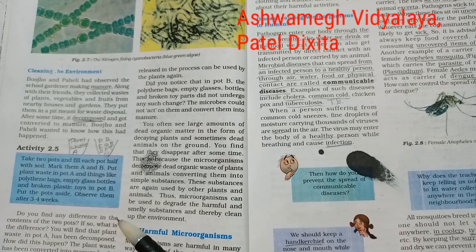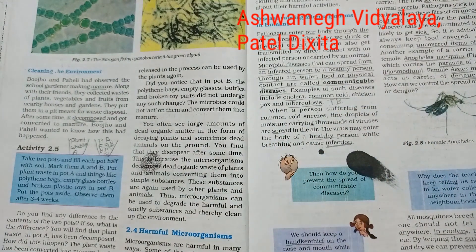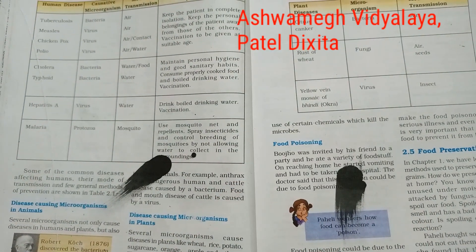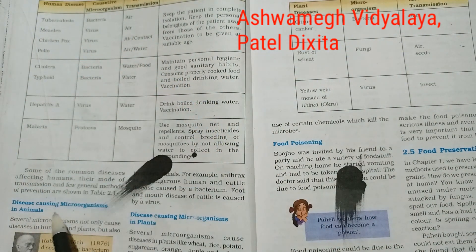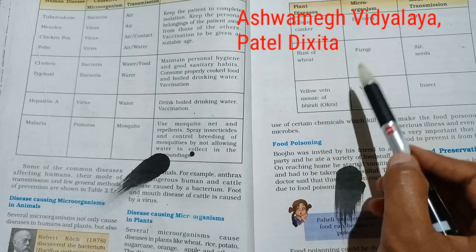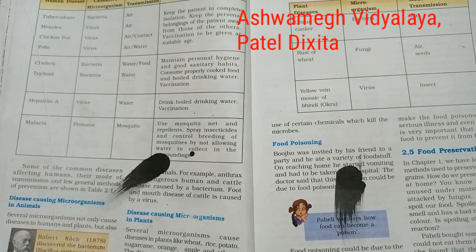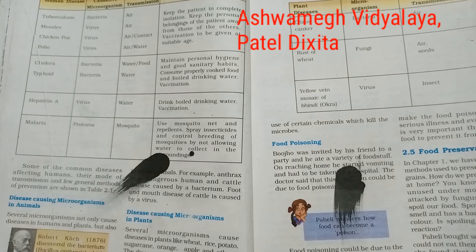Then we learn about some harmful microorganisms — disease-causing microorganisms in humans like malaria, typhoid, tuberculosis, hepatitis and some other diseases. Then we learn about disease-causing microorganisms in animals and in plants like citrus canker, rust of wheat, yellow wheat, and mosaic of bhindi.